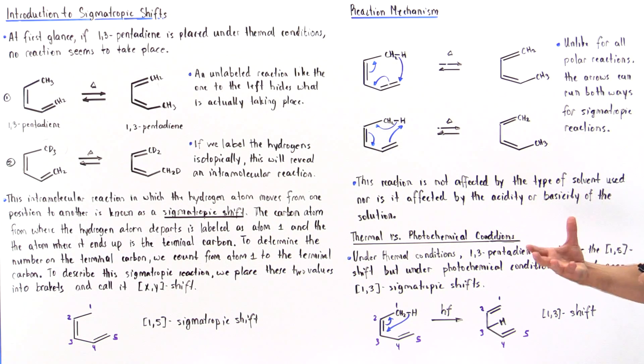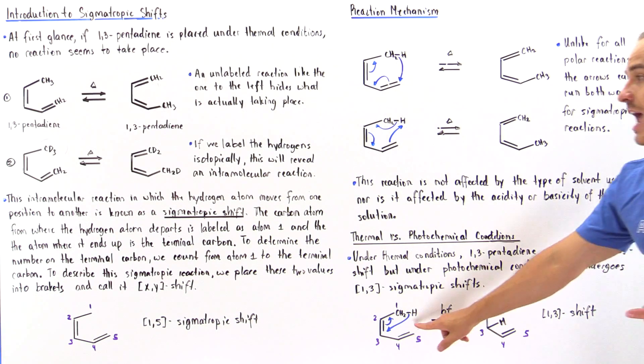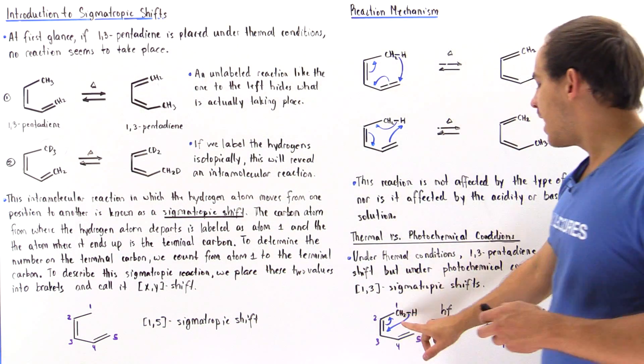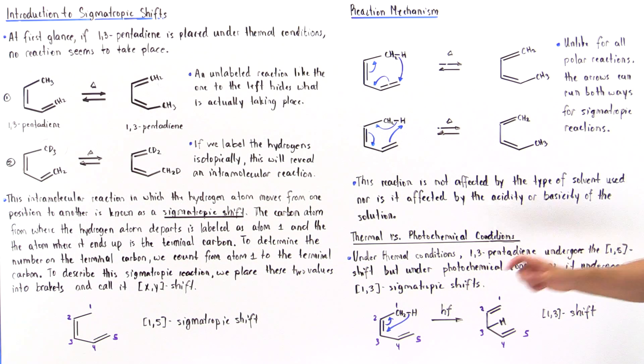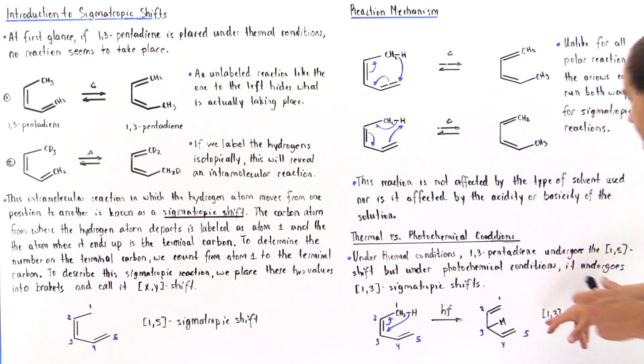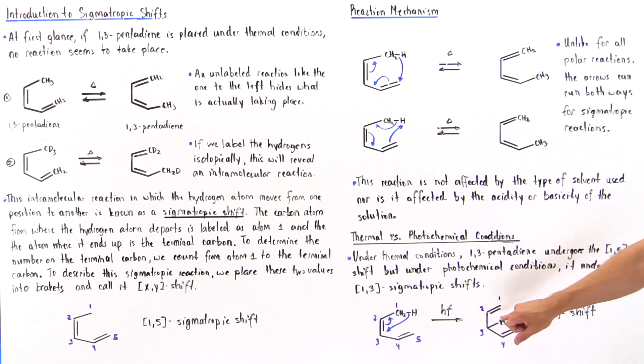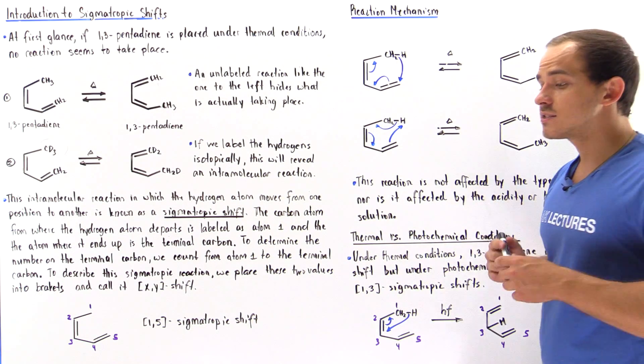However, if the energy source comes from light, if we are under photochemical conditions and we take the same 1,3-pentadiene molecule and react it under light conditions, then we form a different product. We form this product that has undergone a different type of sigmatropic shift. In this case, a 1,3 sigmatropic shift where the H atom basically moved from the first carbon to our third carbon. So we're going to discuss why this actually takes place in the next lecture.